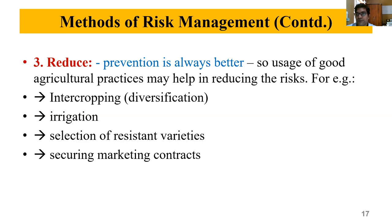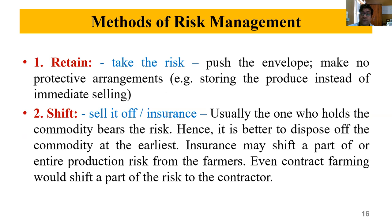Contract farming is a way of reducing risk because the farmer is shifting the risk to the contractor. On the basis of the contract between the farmer and the contract farming company, the contractor has to take the produce. So the farmer can retain the risk, shift the risk, or reduce the risk.